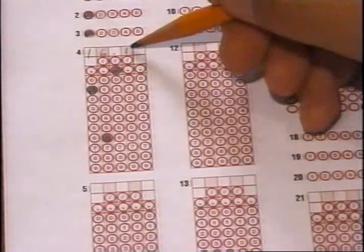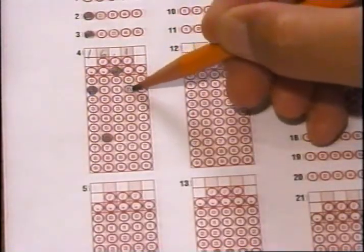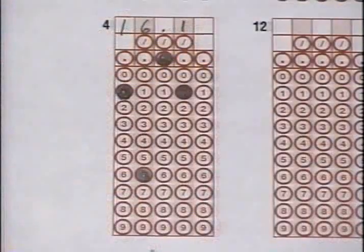The final numeral of your answer is a 1. So find the 1 circle in that column and fill it in. When you are finished, your answer will look like this.